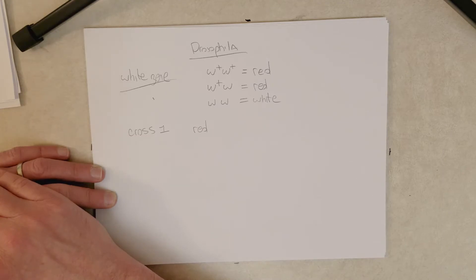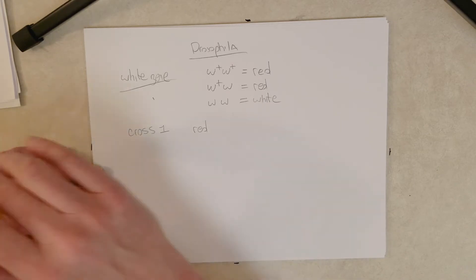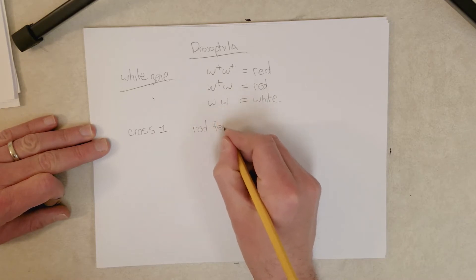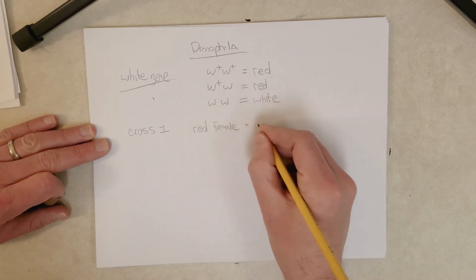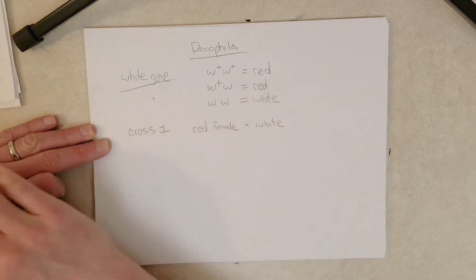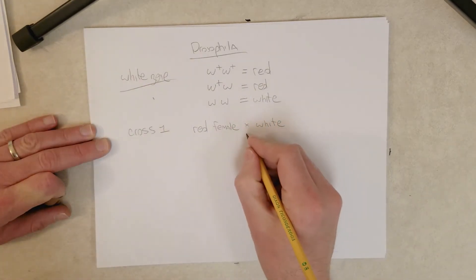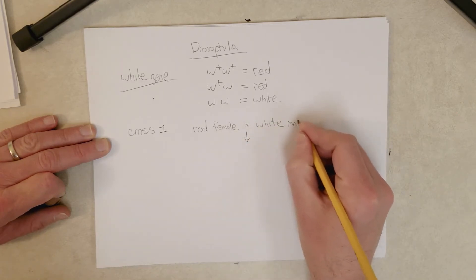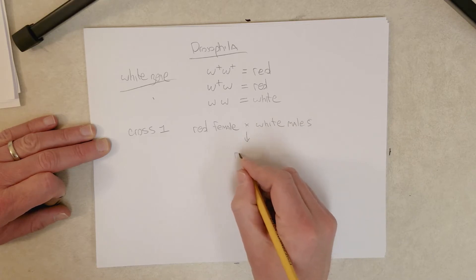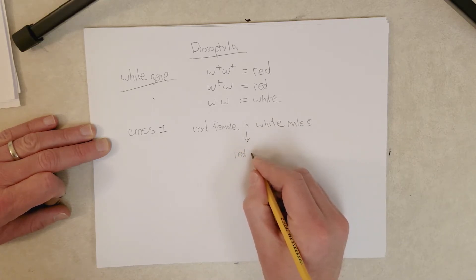Morgan's experiments were the most convincing, the first experiments that convinced nearly all scientists that chromosomes do indeed carry the genetic information. Morgan crossed red females with white males in this first cross right here. What he found was, similar to Mendel, all the offspring had red eyes.